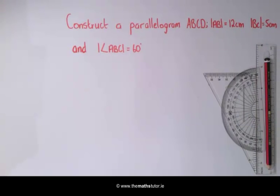We are going to construct a parallelogram given the length of the sides and the measure of the angles. In this example we are going to construct a parallelogram ABCD where AB is 12, BC is 5, and the angle ABC is 60 degrees.